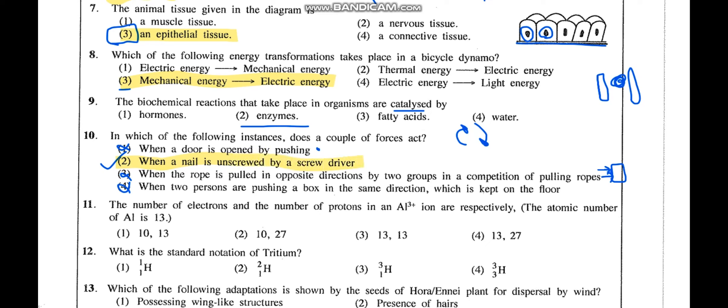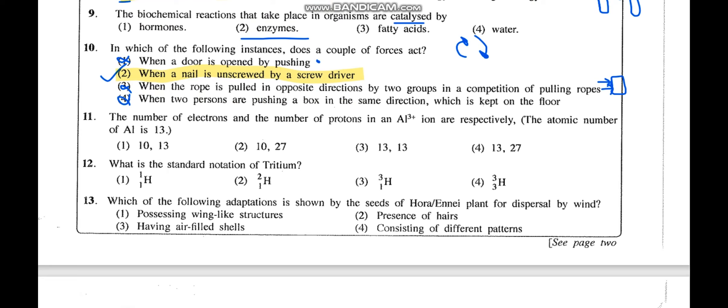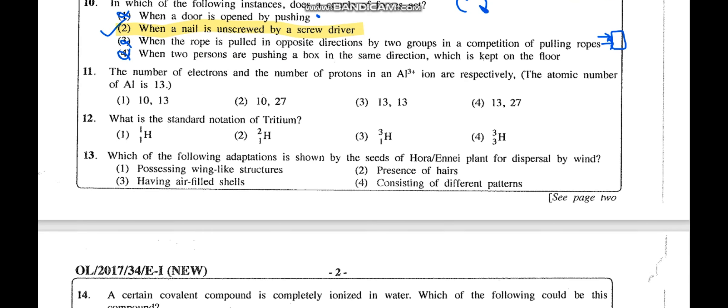Always depend on the textbook — all examples given in the options come from the textbook. Question 11: The number of electrons and protons in Al³⁺ ion. Aluminium's electronic configuration is 13: 2, 8, 3. Al³⁺ means three electrons are removed, leaving only 10 electrons. When an atom converts to an ion, only electrons are exchanged — proton number does not change. Aluminium's atomic number is 13, so protons remain 13. The answer is the first option: 10 electrons and 13 protons.